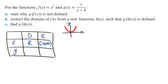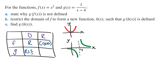g(x) is a hyperbola translated four units to the right. Doing a quick sketch of g(x), the domain of g is going to be all real numbers except for 4, and the range of g is going to be all real numbers except for 0.